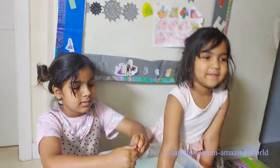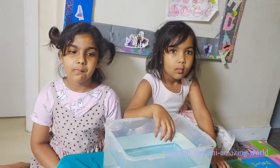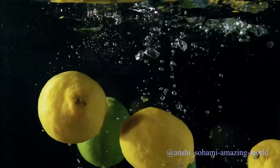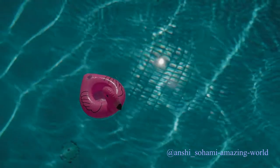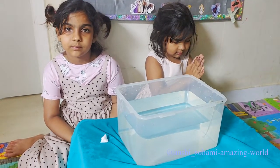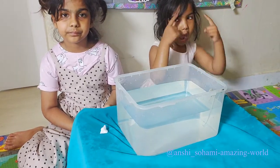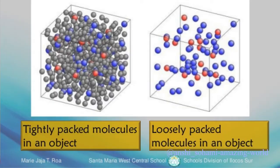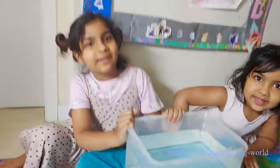Can you explain more? I don't understand! Don't worry about it, Anshi! Do you know why few things float and why few things sink? Everything around us is made up of small molecules. Density means tightly packed molecules in an object versus loosely packed molecules. Higher density means tightly packed molecules, and lower density means loosely packed molecules in an object. That is the meaning of density. So we will try more experiments!